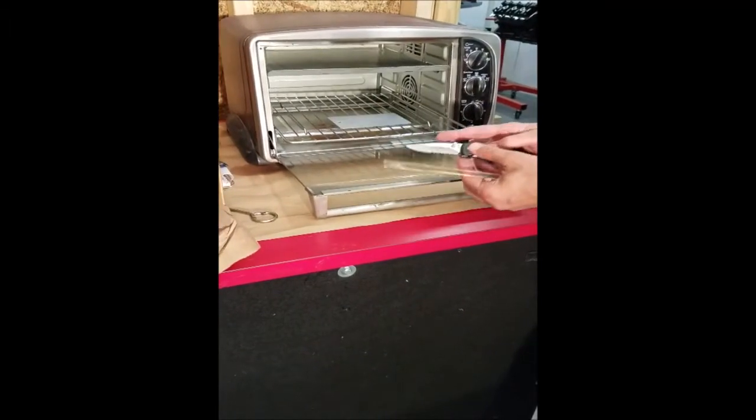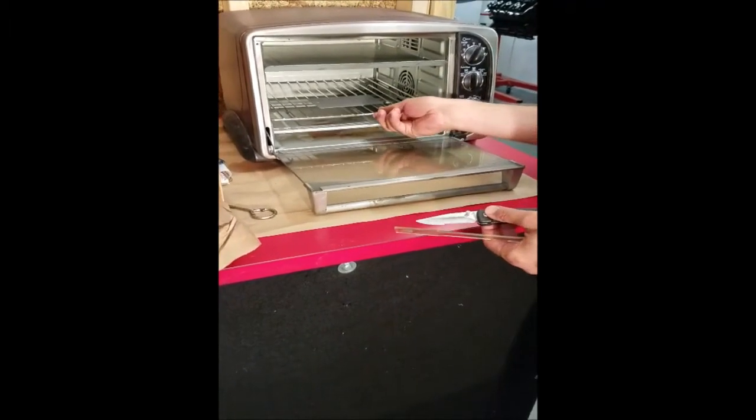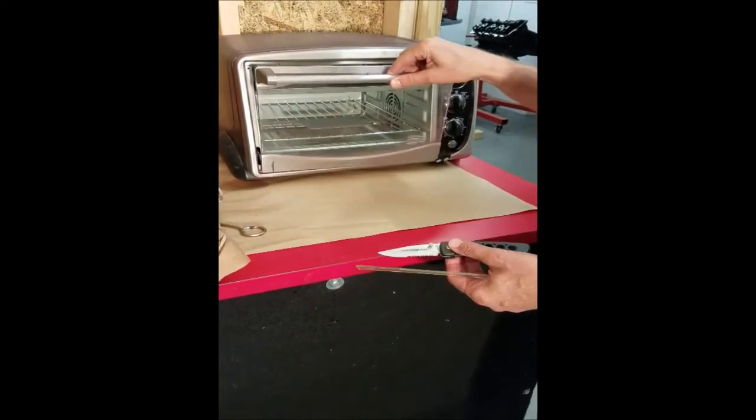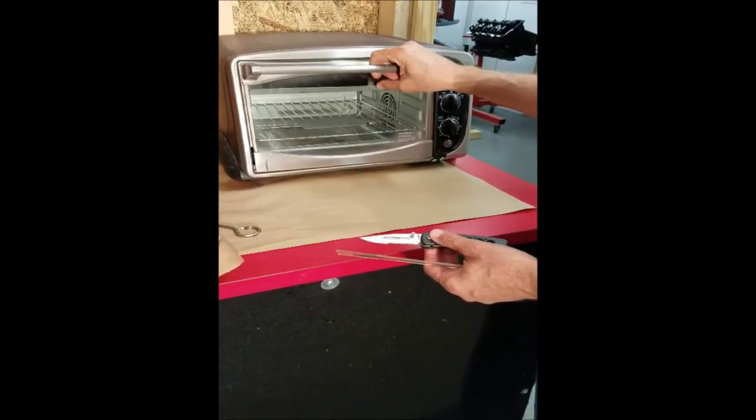We're going to stick it into our simple toaster oven. 350 degrees for 15 minutes is what the recommended cook time is. And that's it.